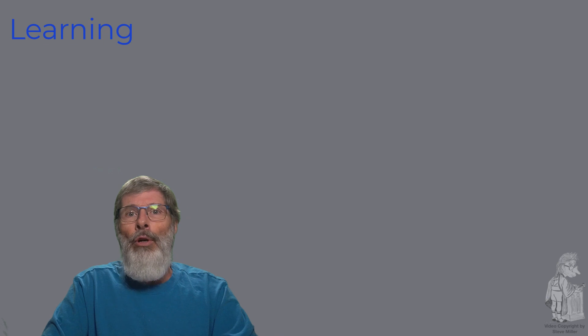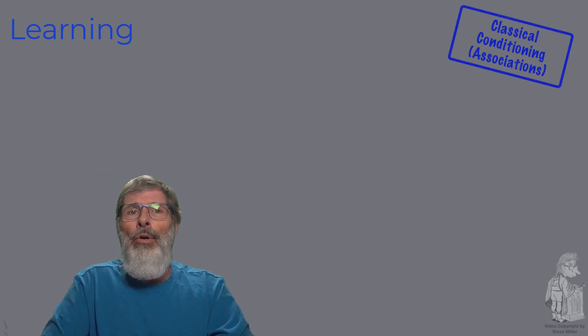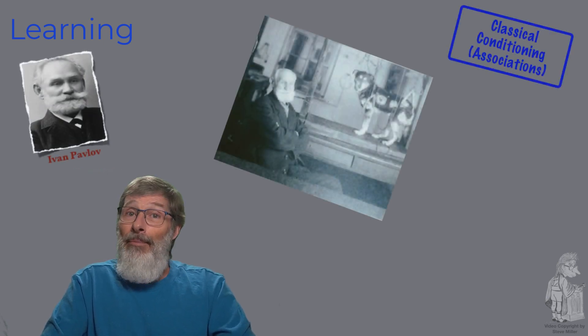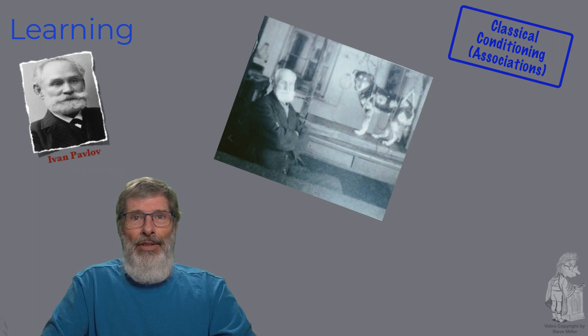Classical conditioning is a simple form of associative learning that enables organisms to anticipate events. The founder, Ivan Pavlov, who was a biologist, came up with classical conditioning. He was studying the salivation of dogs and accidentally discovered classical conditioning.